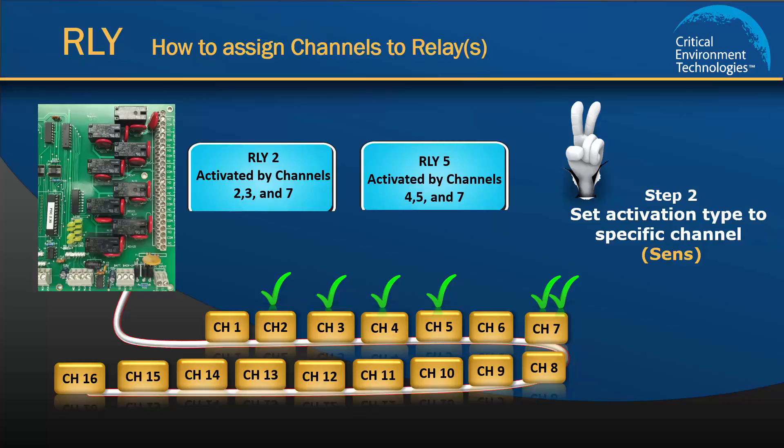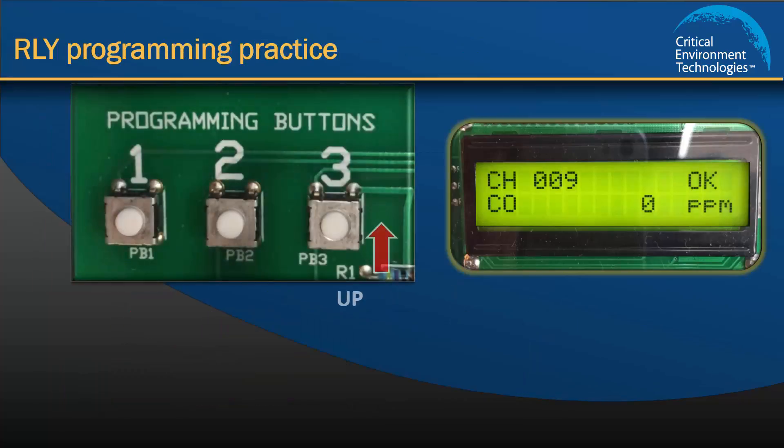With the PDC open, look for the LCD display and find the 1, 2, and 3 programming buttons to the left of the display. The image on your screen shows an enlarged view of the display and the programming buttons. The programming buttons operate like this: if you want to scroll up, press 3; if you want to scroll down, press 1; and to save your selection or to move on, press 2.